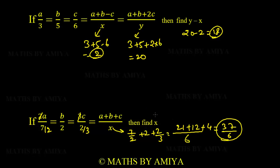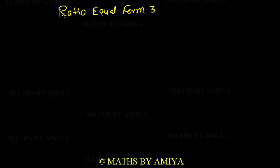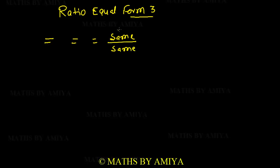Let's move to another concept: ratio equal form 3. This is the reverse of form 2. We have learned that if ratios are equal, the same change in numerator affects the same change in denominator. The reverse is also true.